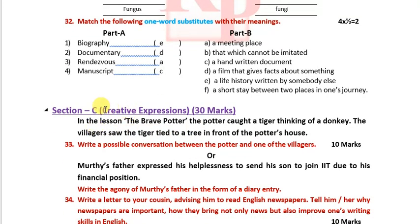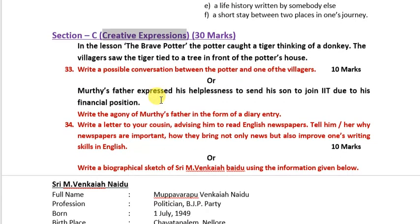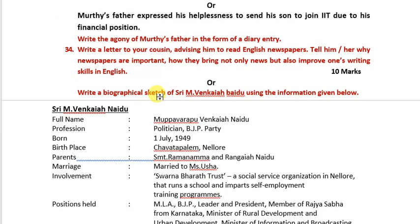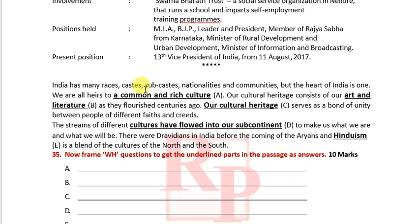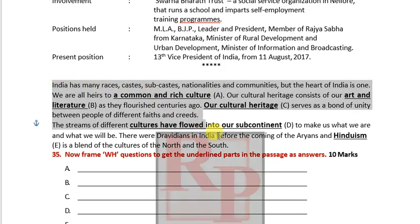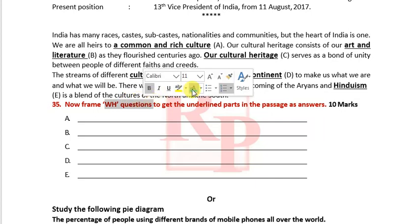Next, creative writing and creative expressions — it has been given for 30 marks. This includes conversation, description, letter writing, and biographical sketch. The next one is framing WH questions.